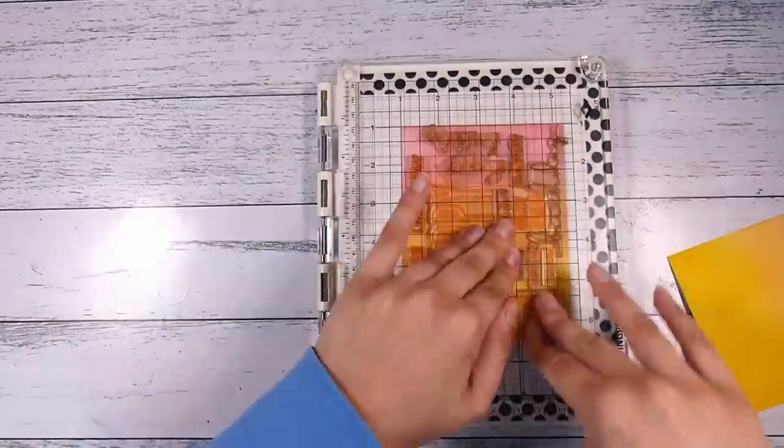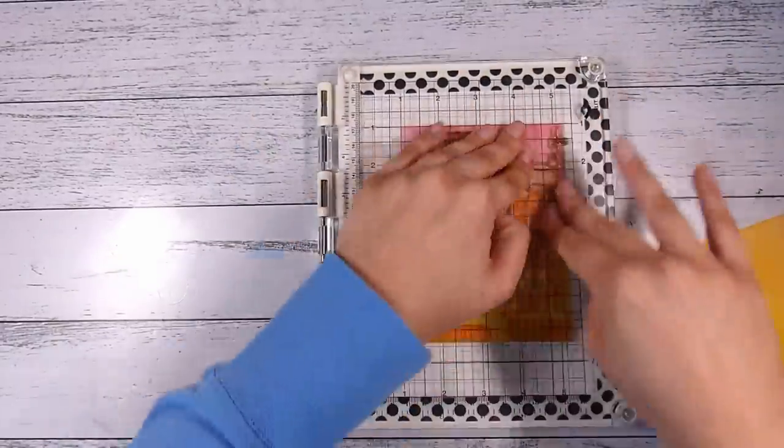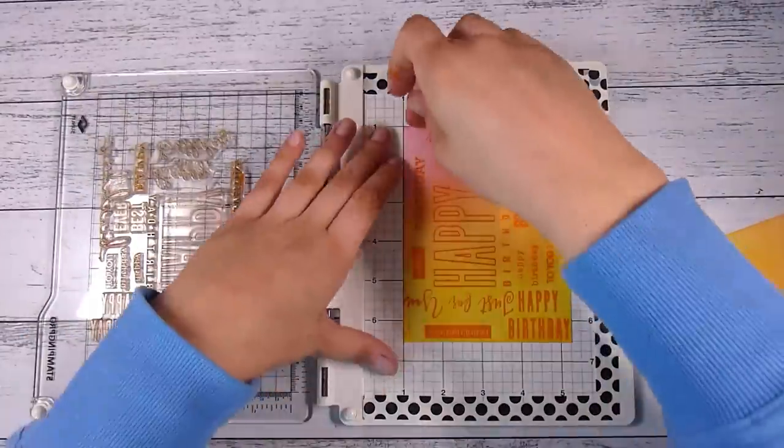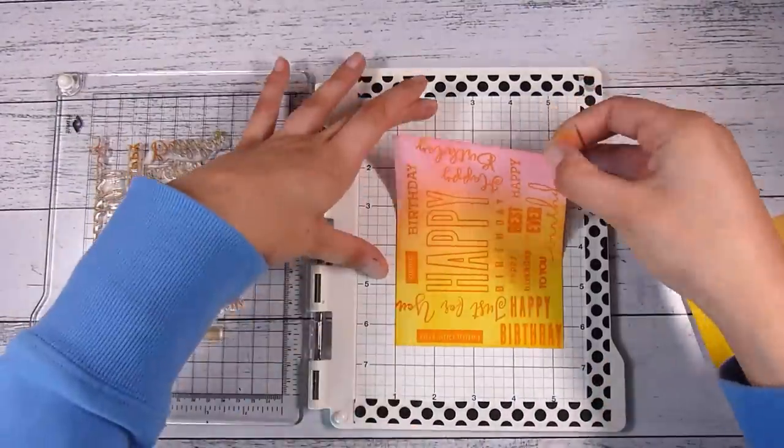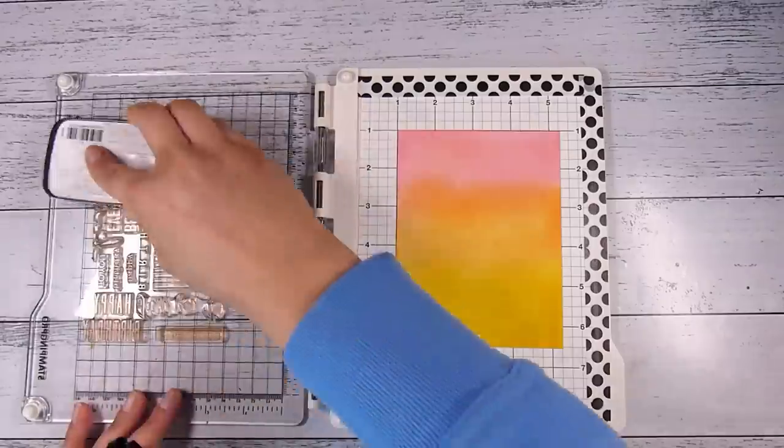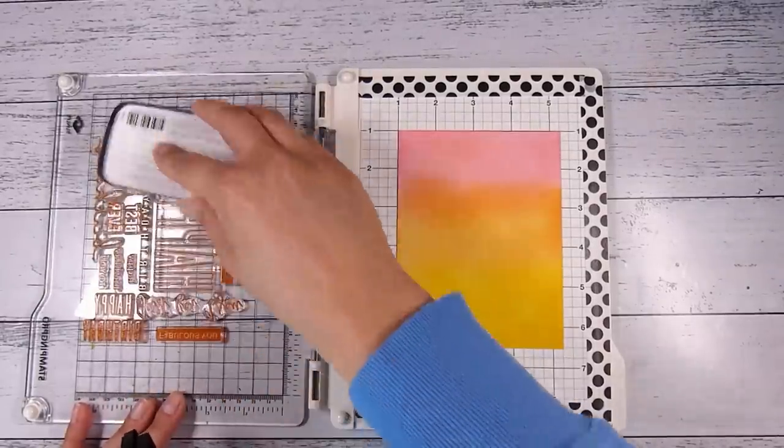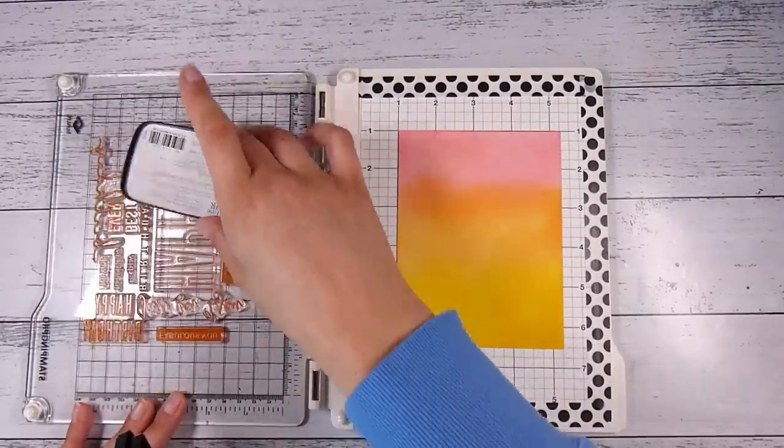So I do the orange over the whole background instead of just part of it. Now as I said, this is personal preference. You can go as dark here with the colors, as light here with the colors, anything you want. All you need to do is then pick that up, put your second piece in, and you want to stamp exactly the same thing in the same place again.